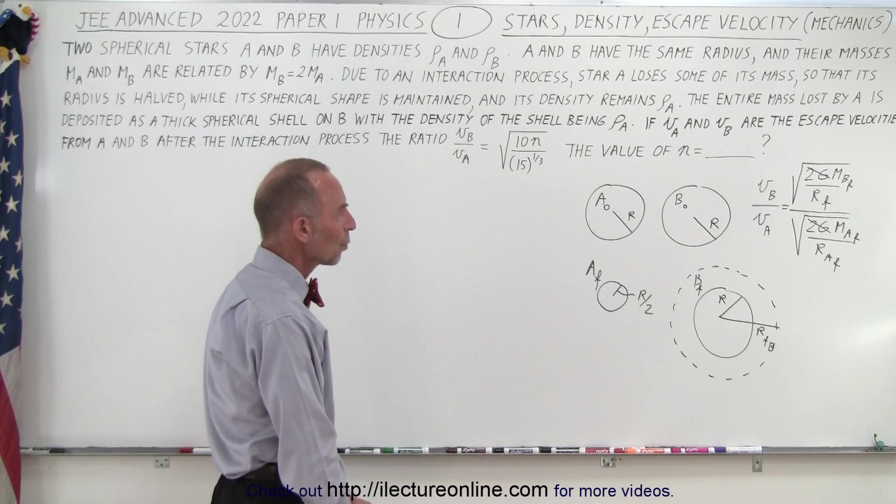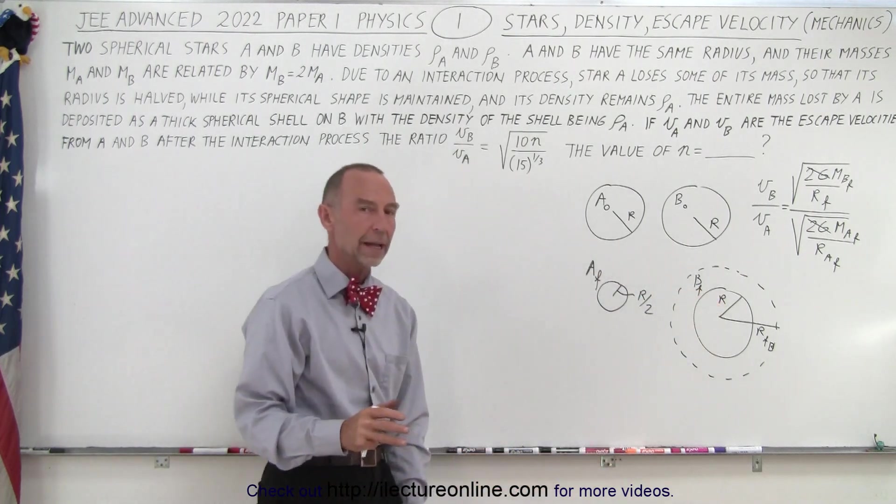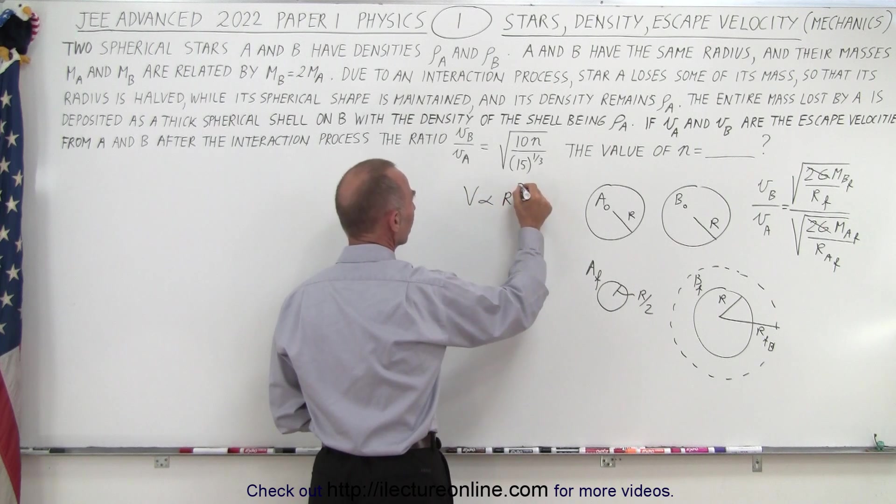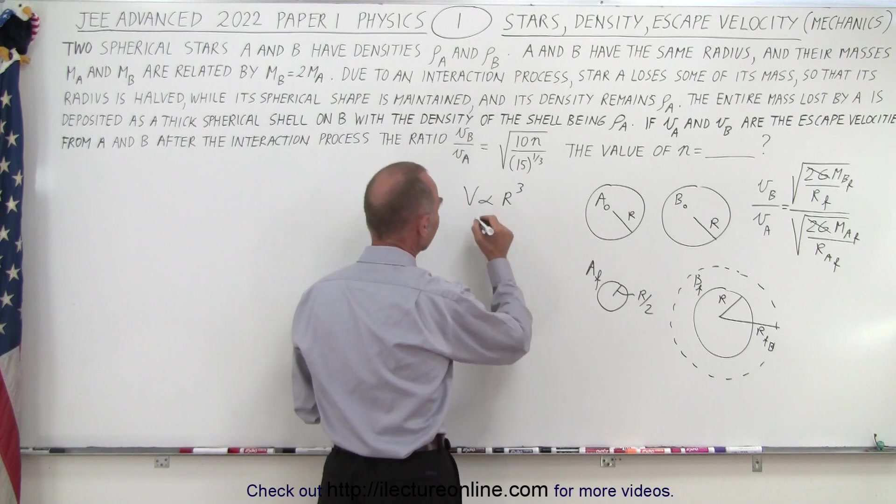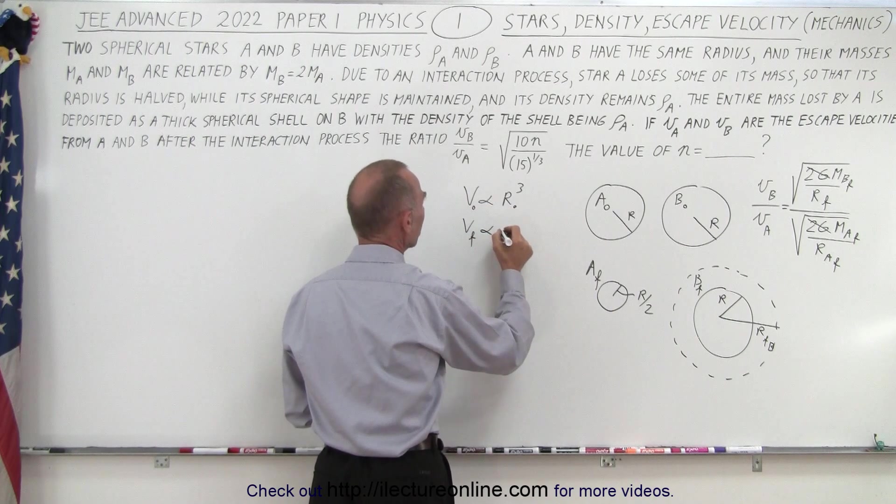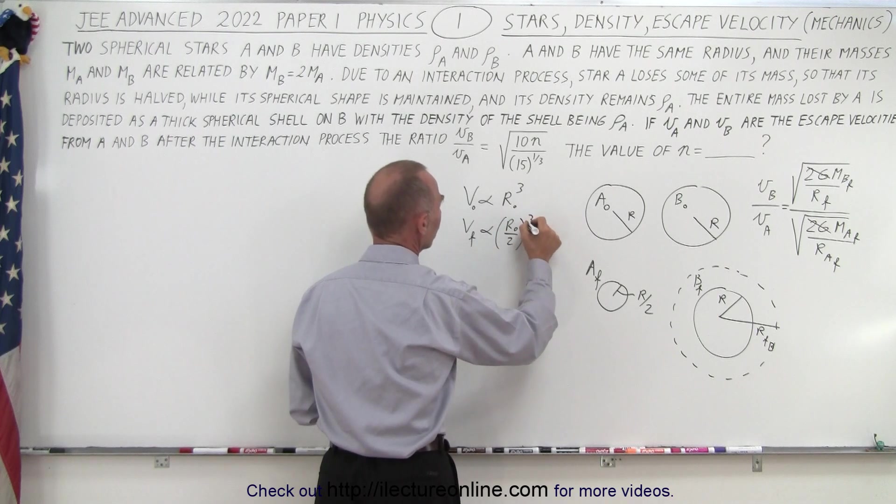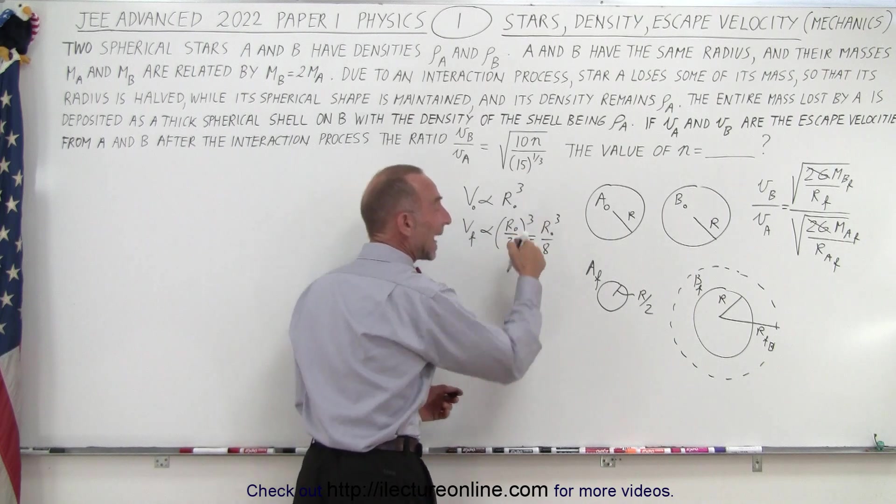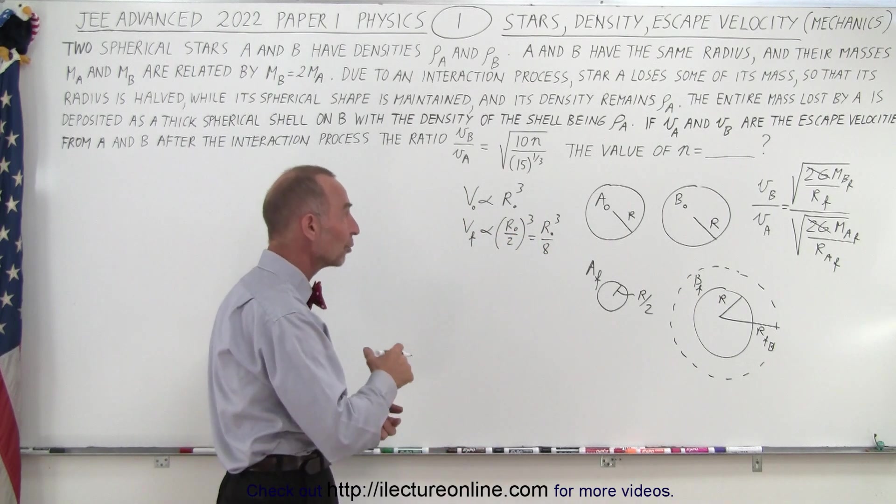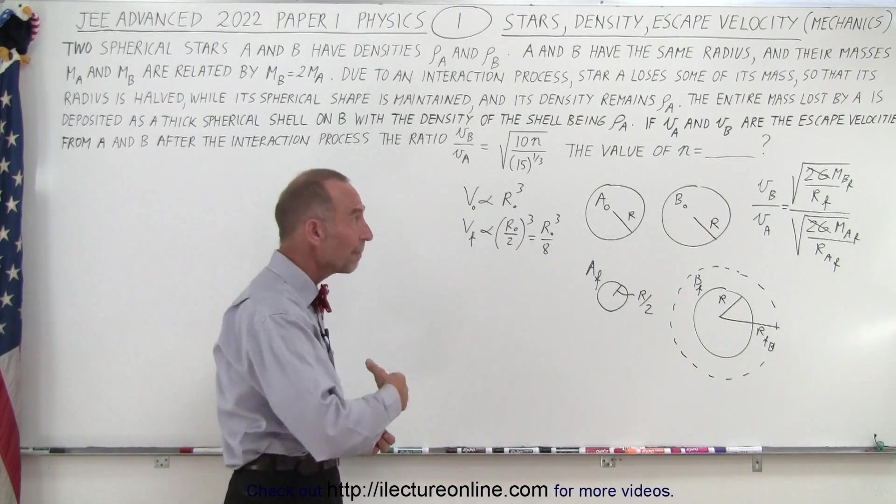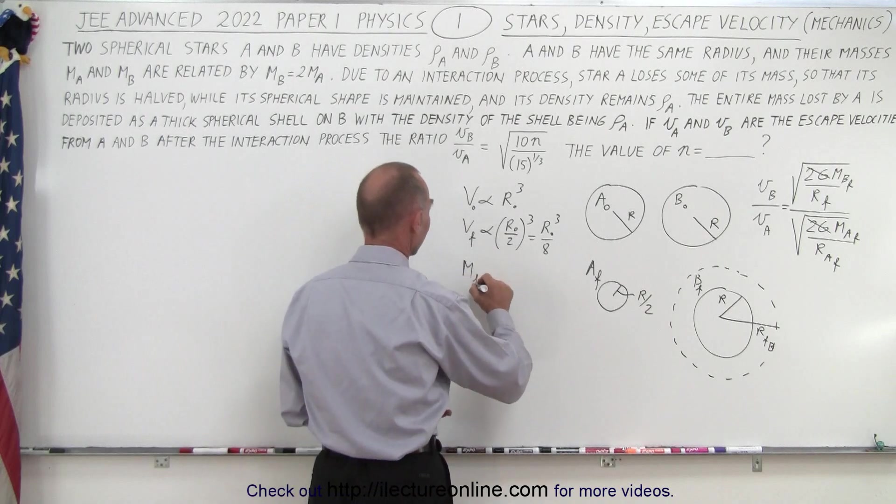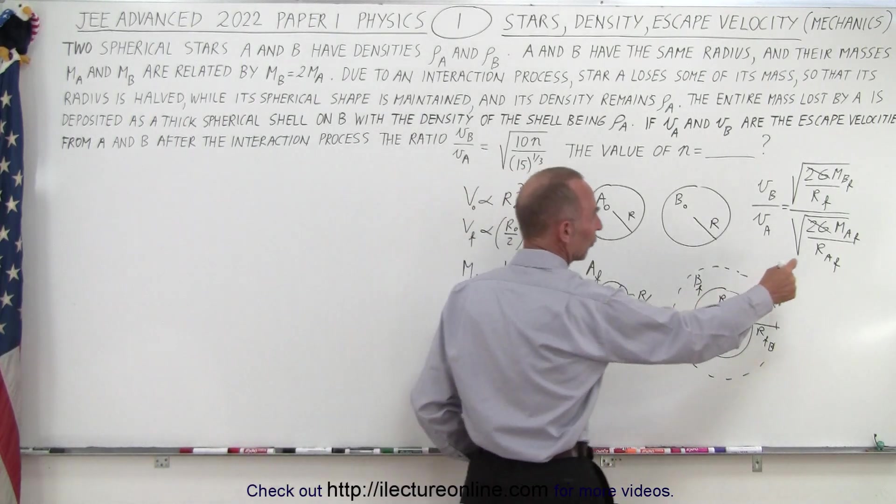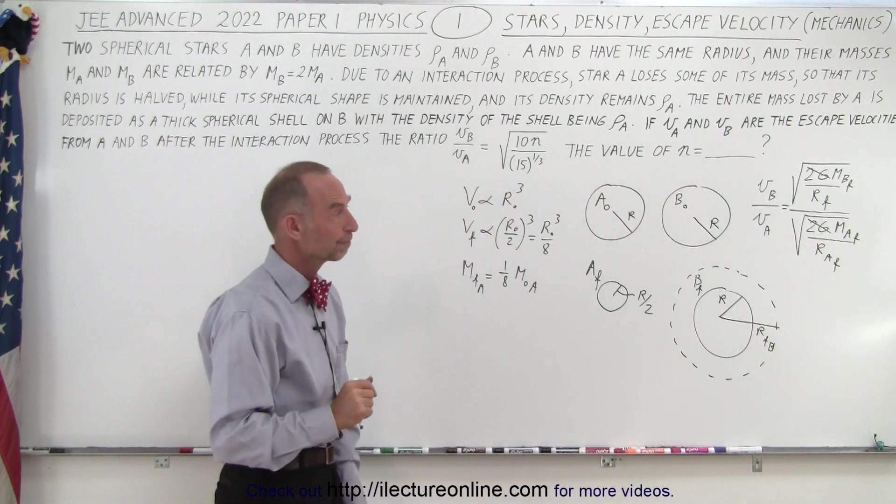All right, so first of all, we need to realize how much mass is lost from A. If the radius went down to half, remember that the volume is proportional to the radius cubed. And so then, if the radius goes to half, that would be the initial volume, the initial radius, the final volume then would be proportional to the initial radius divided by 2 cubed, which is equal to R cubed divided by 8. In other words, you can see that now, we have only 1/8 the original volume. The final volume is down to 1/8 the original volume. And since the density doesn't change, that means the mass final, M final for A, is now equal to 1/8 M initial for A. So we've gone down to 1/8 the mass. So for the final mass, we now know that it's 1/8 the original mass.